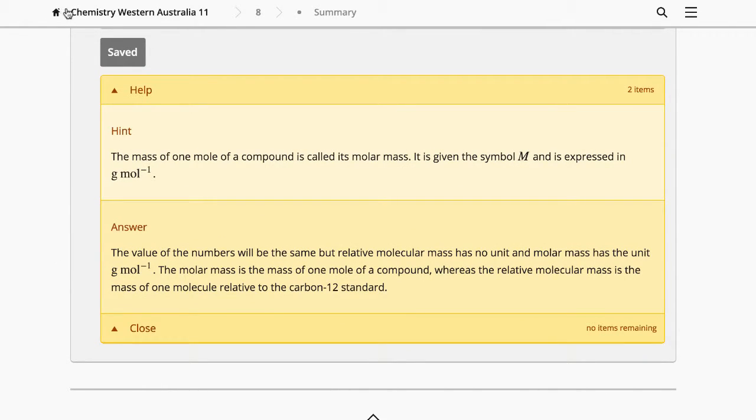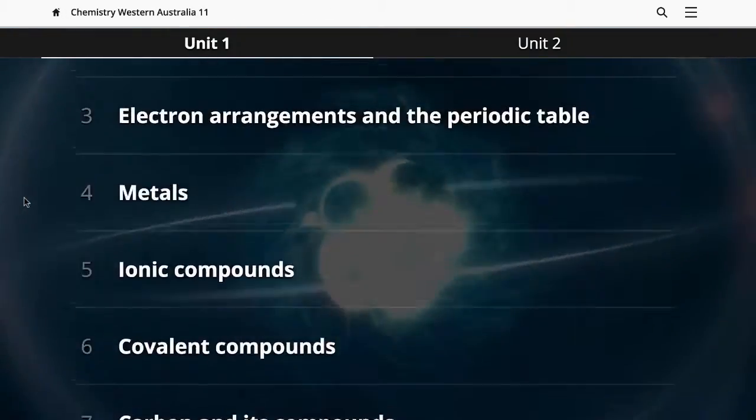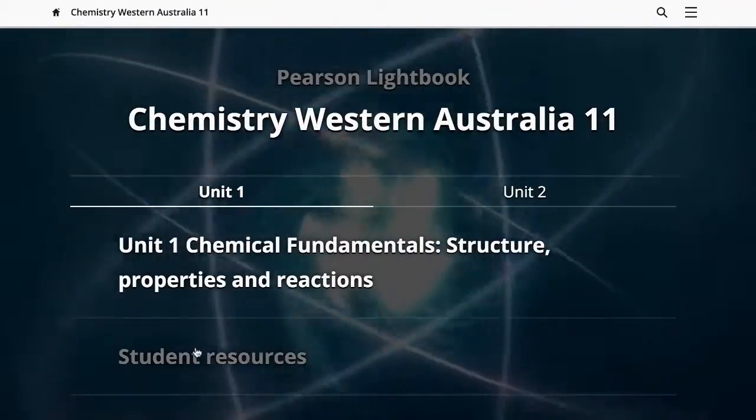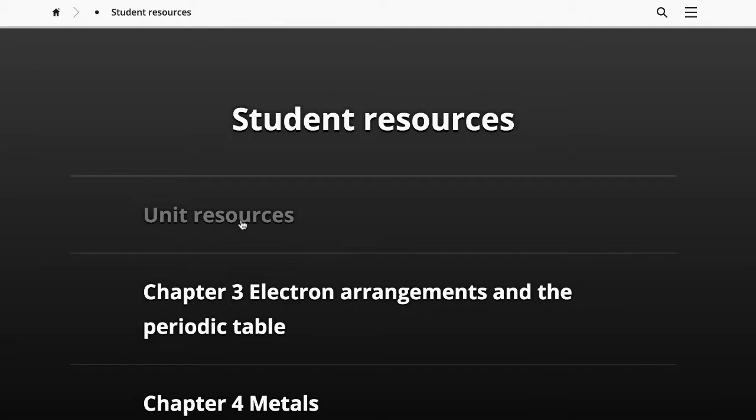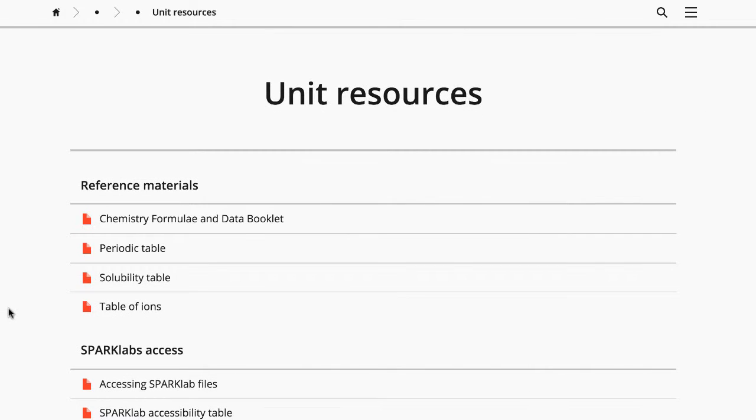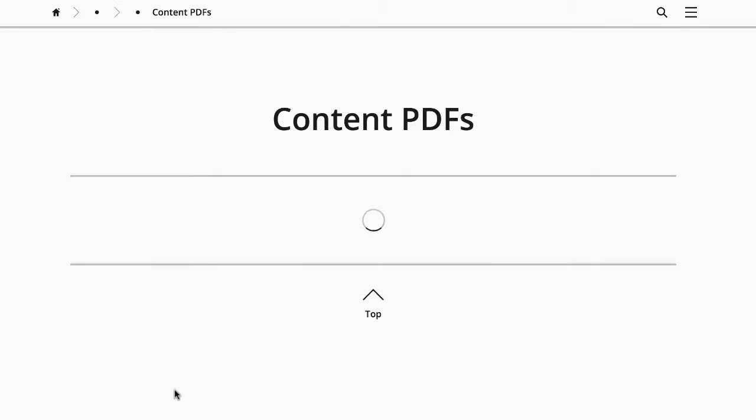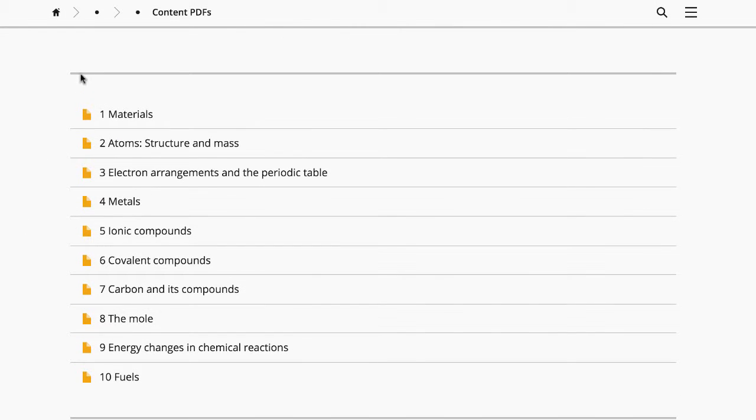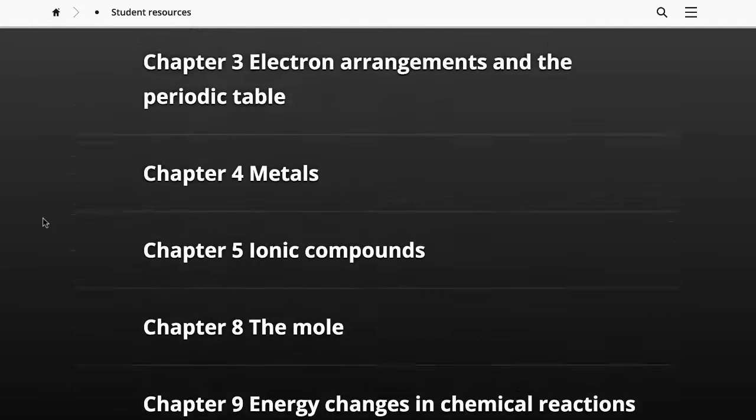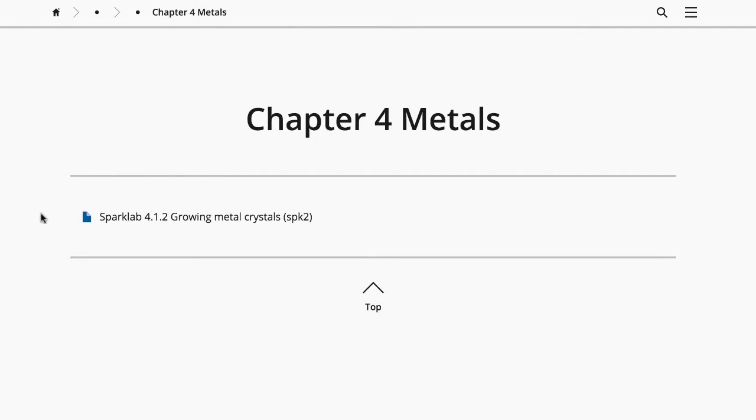Before I finish, I'm going to show you the student resources. In the unit resources, you'll find useful tools and documents, such as the formulae and data booklet. There are also content PDFs, which are simple PDF versions of each chapter. Many of the chapters also have related practical activities in the form of Sparklabs. There are instructions on how to use these in the Lightbook help documentation.